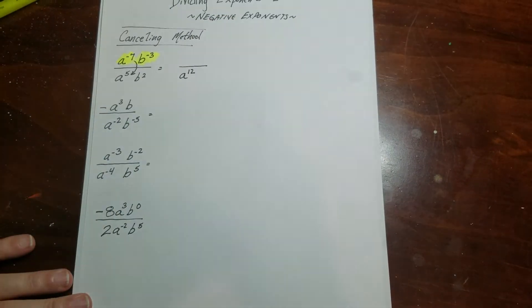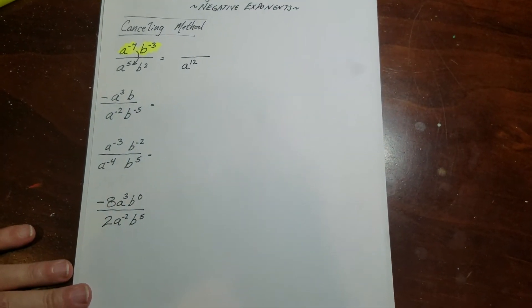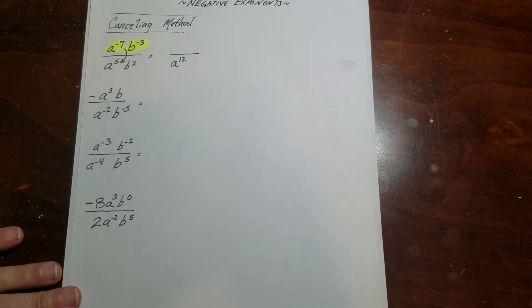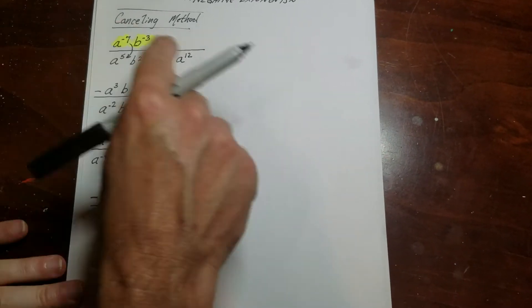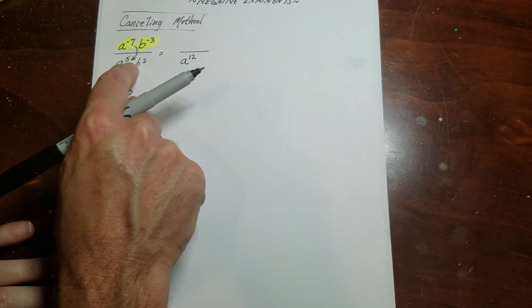Now one of the mistakes that people will make with this is when they think of, you know, quote-unquote moving this, they'll actually do negative 7 plus 5, and they'll make this a negative 2. But remember, the whole point of moving it down is so that the exponent becomes positive.